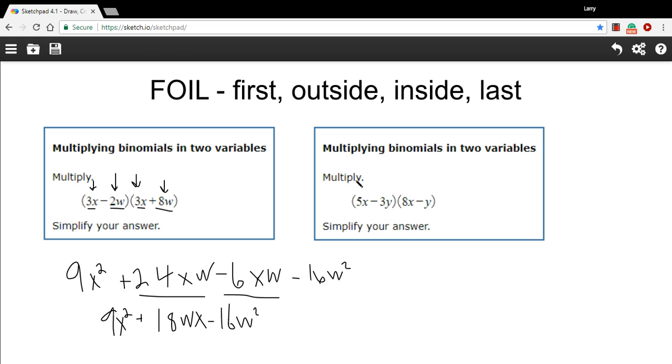All right, let's try one more. The first terms here are 5x and 8x. So 5 times 8 is 40, and the x times x is x squared. Our outside terms, 5x times a negative y. So that's a negative 5xy. Inside terms, negative 3y times 8x. That's a negative 24xy.